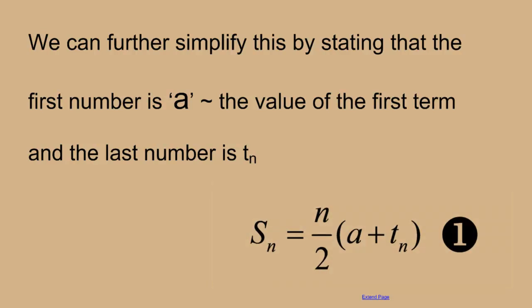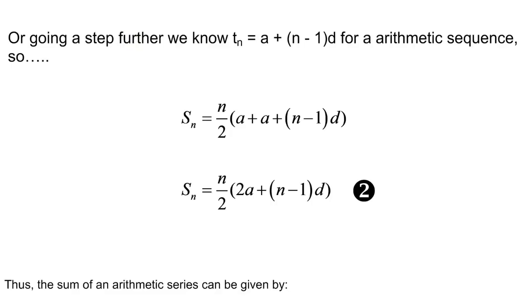Now, what if we don't know what the last number in the series is? Well, we can adjust for that as well. If we don't know what the last number in the sequence is, we can just substitute for t_n, a plus (n - 1)d, since we know that that's the formula we used to solve for the nth term in a sequence.